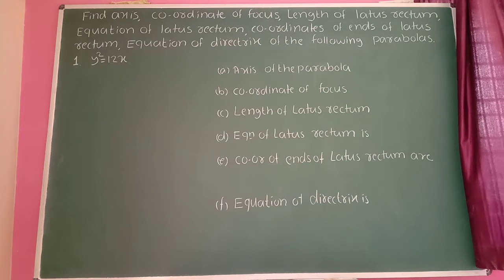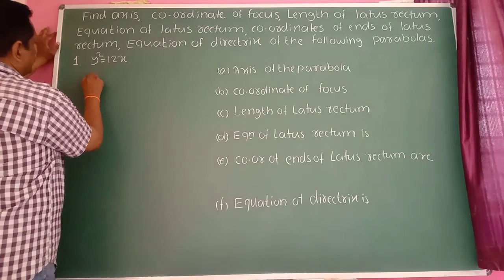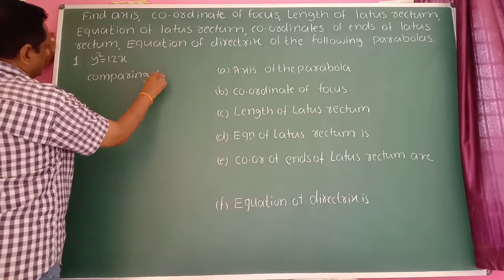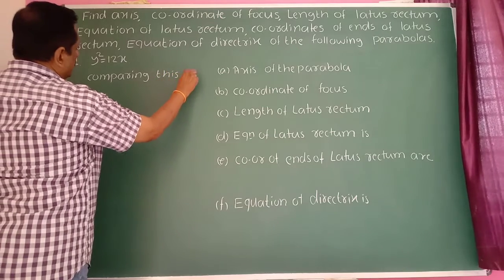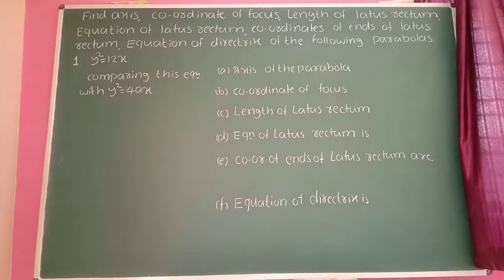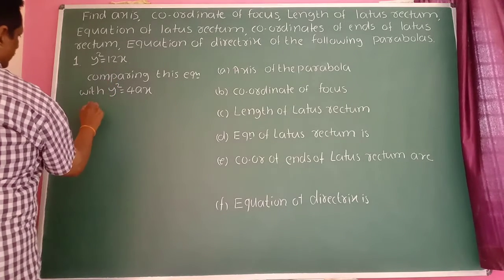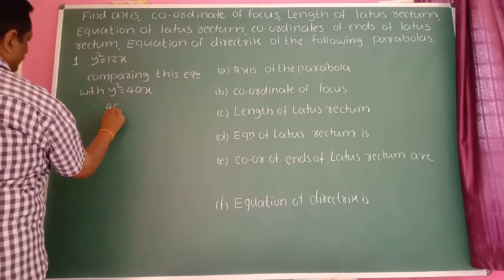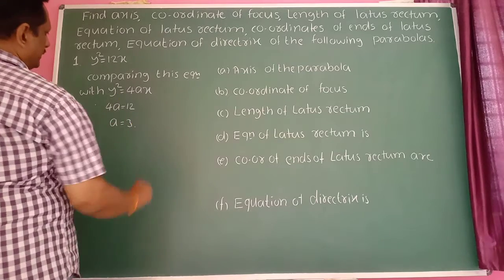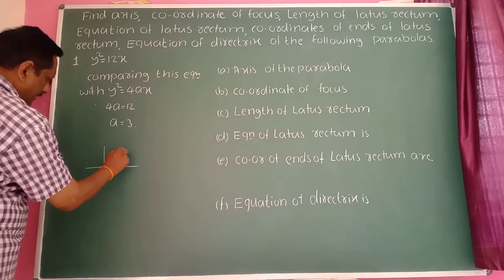First example: y² = 12x. Comparing this equation with the standard equation y² = 4ax, therefore 4a = 12, so the value of a is 3. Since y² = 4ax, the parabola opens to the right side.